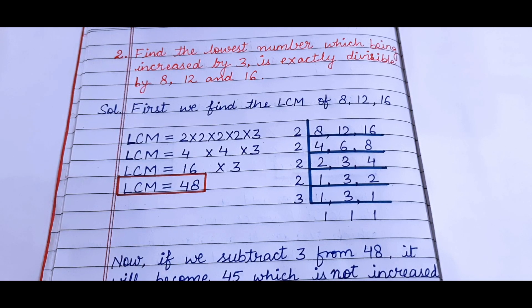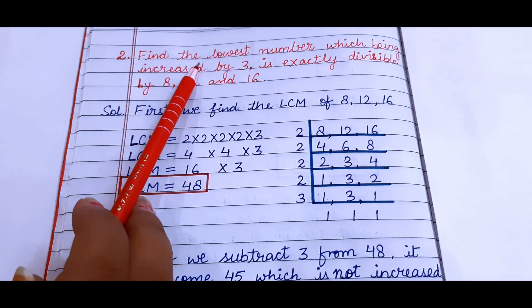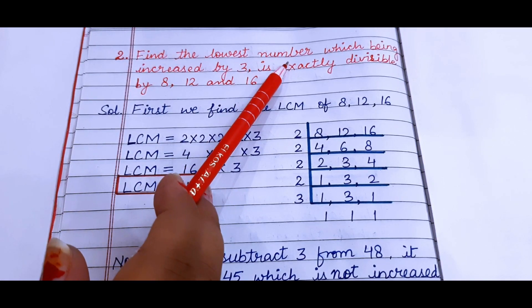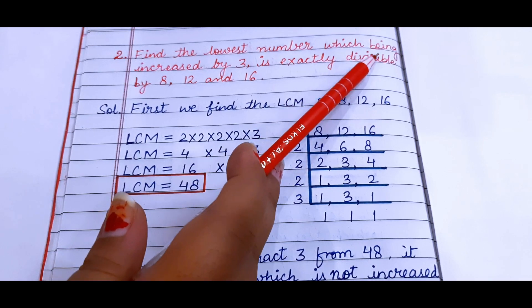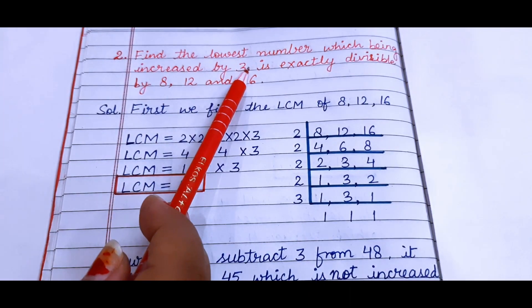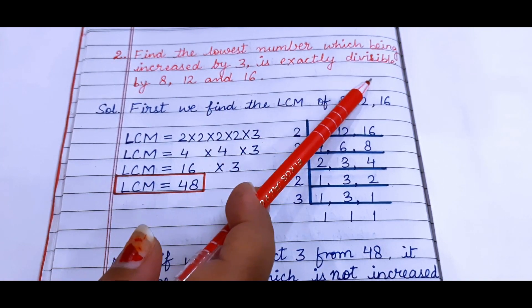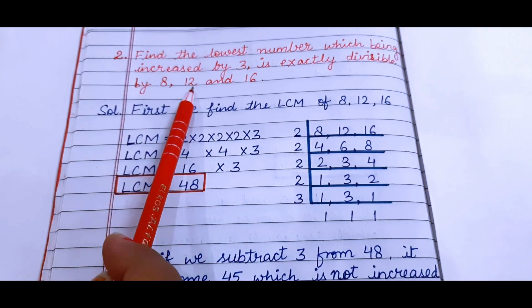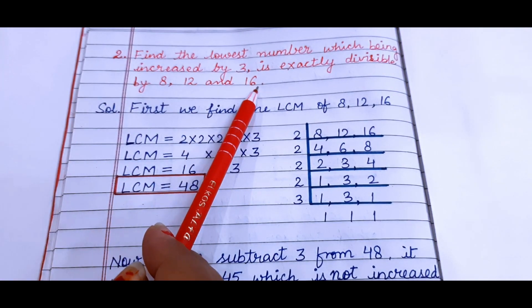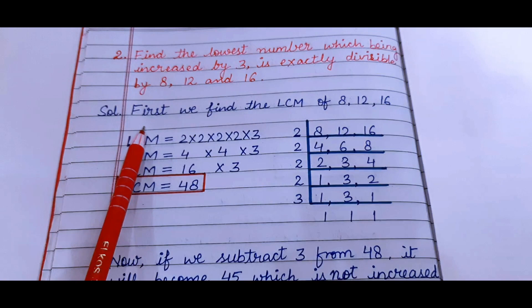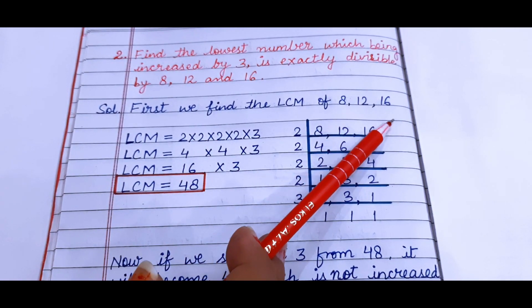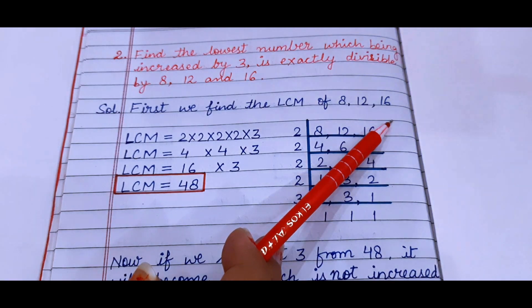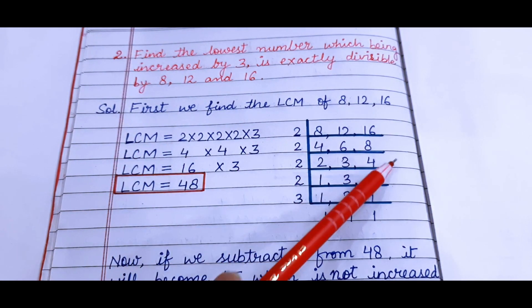Now the next question is find the lowest number. Lowest number means LCM. Least number which being increased by 3 is exactly divisible by 8, 12 and 16. So again first we find the LCM of 8, 12 and 16.